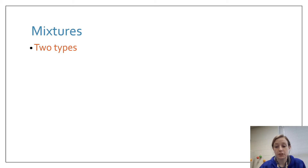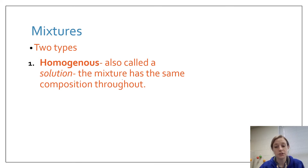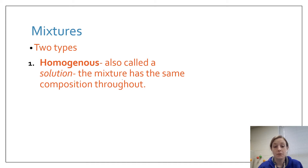Our two types of mixtures: the first one we're going to talk about is homogeneous mixtures. Homogeneous mixtures are often also called solutions — just another vocabulary term — and we're going to spend a whole unit talking about solutions later on in chemistry. A homogeneous mixture is a mixture where the composition is the same throughout. That prefix 'homo' means same, so homogeneous means it's the same throughout.